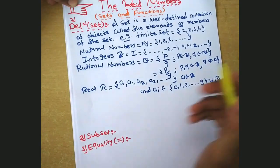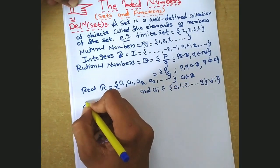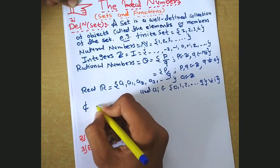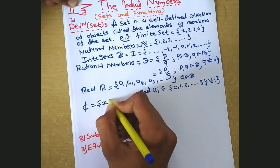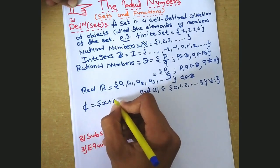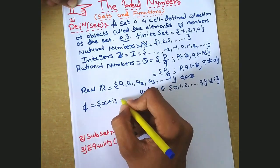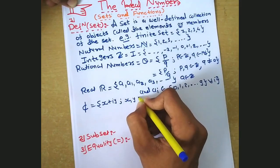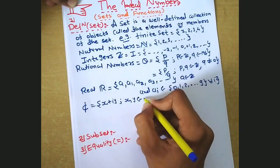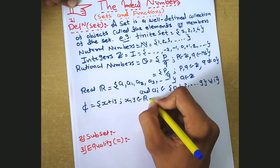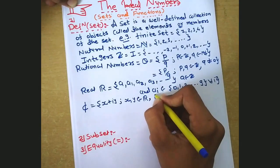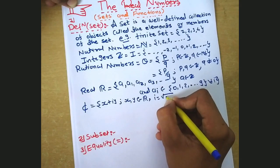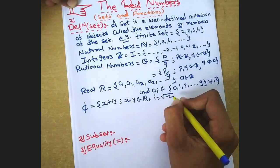Now the set of complex numbers. It is defined as {x + iy} where x and y belong to R, and we know that i is equal to the square root of minus 1.